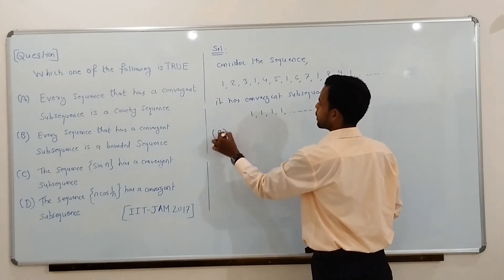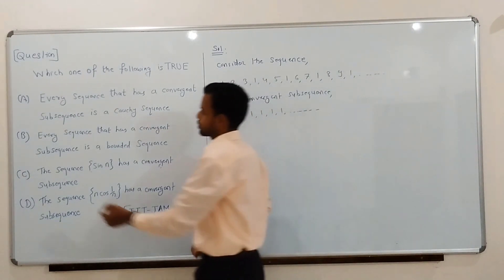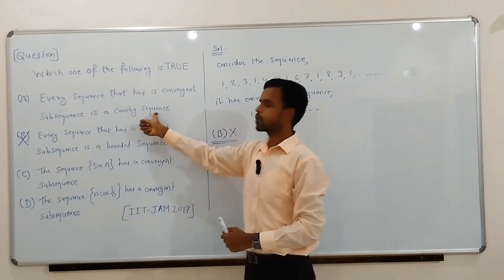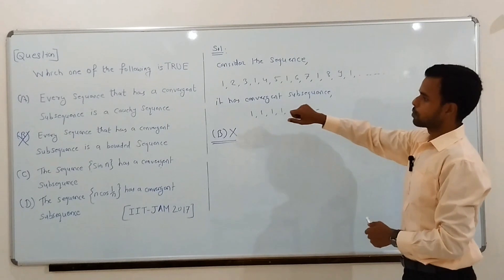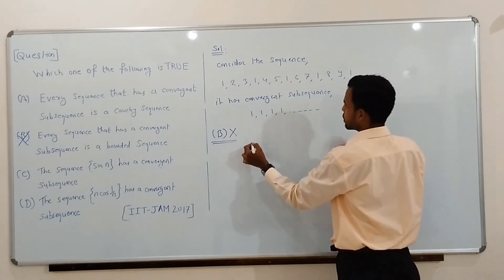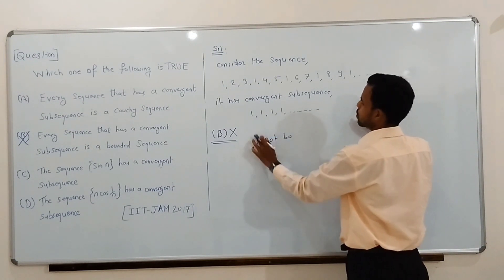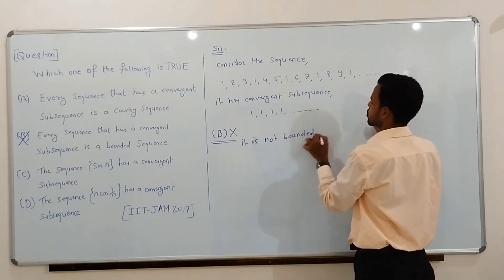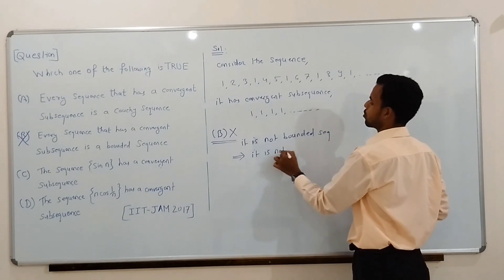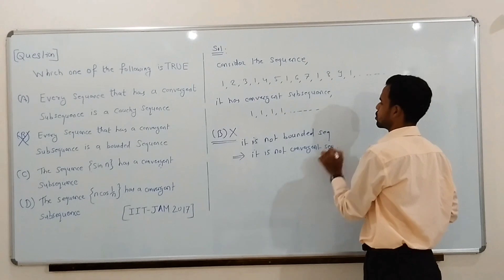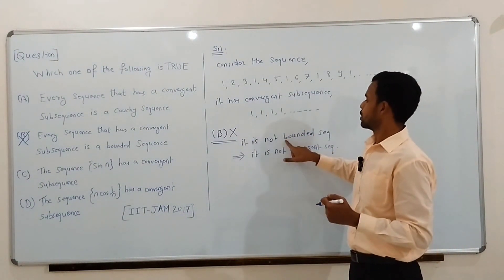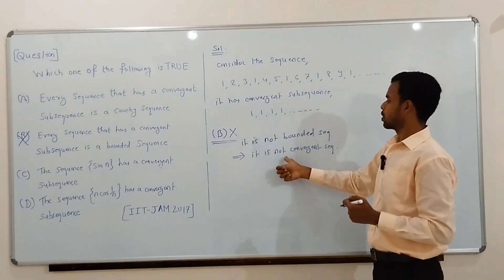So, we have constructed a sequence that is not bounded but has a convergent subsequence. Therefore, option B is false. Now let us check option A. Option A states that every sequence that has a convergent subsequence is a Cauchy sequence. The same example works for option A — the sequence we constructed is not bounded, and it is not a bounded sequence.